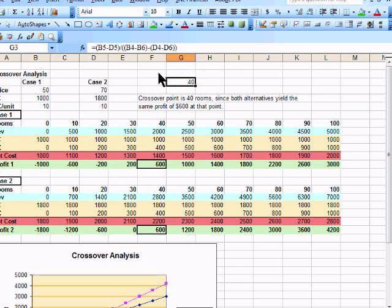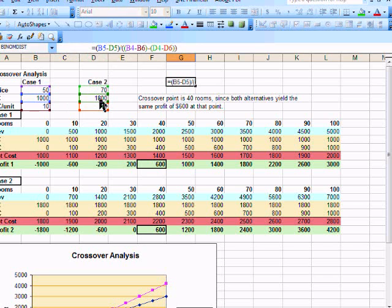And what we do now is we simply take the difference between our fixed costs. So we have our two fixed costs here, case one minus case two. Don't worry that it's negative in that situation because we'll do this work the same way for both. And then we're going to do the same thing we did before.